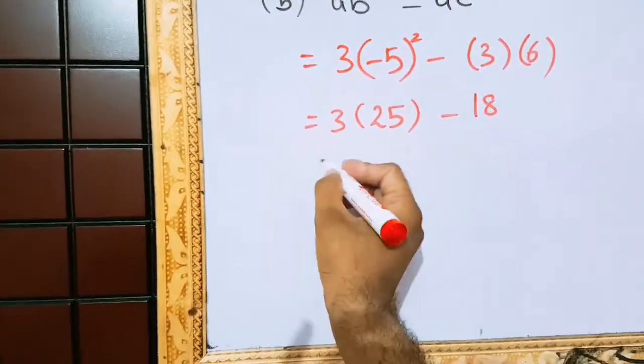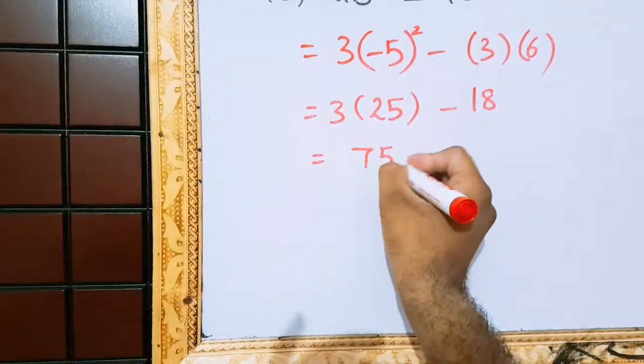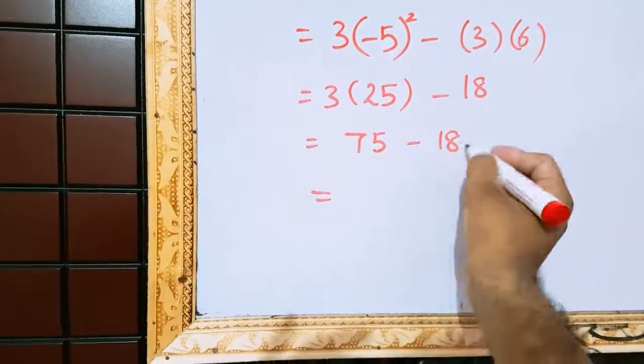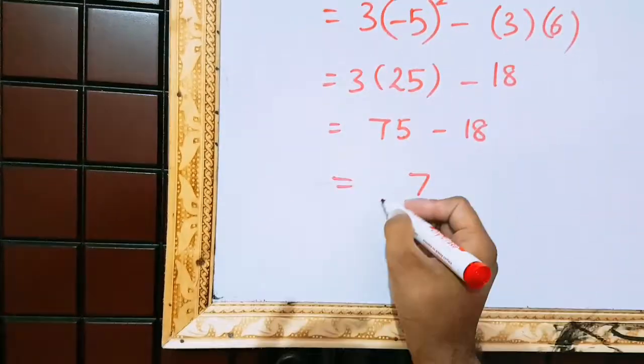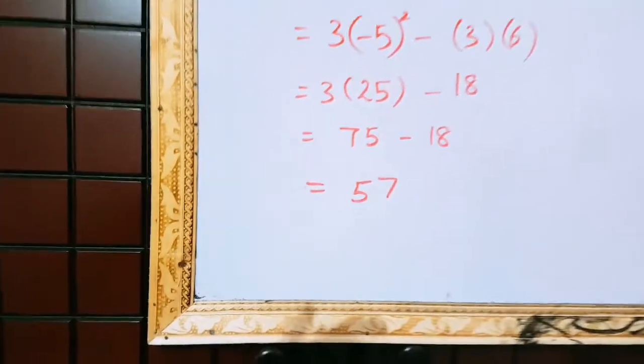3, 6 times 18. 3, 25 times 75. Minus 18. So we shall get 15 minus 8, 7. 6 minus 1, 5. 57 is the answer of this part.